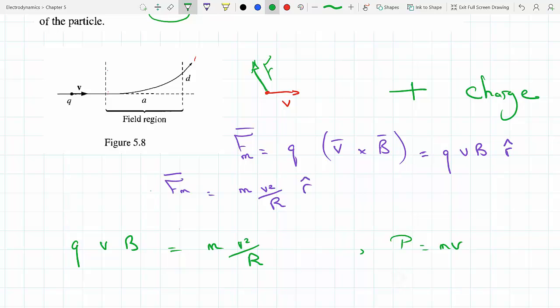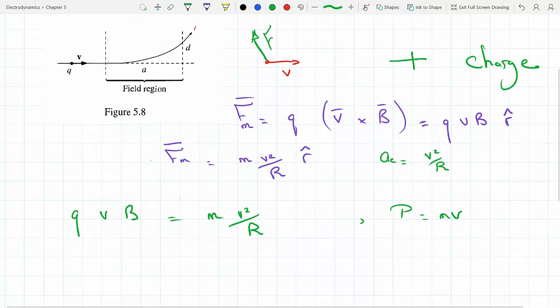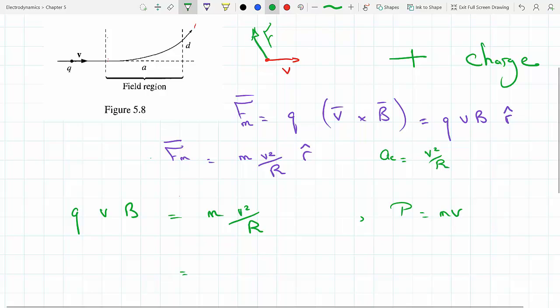So this becomes mv²/r. We know that momentum is mv, so that means this is going to be the momentum, the magnitude of the momentum, times v/r—because mv is the momentum and then you're left with v/r.